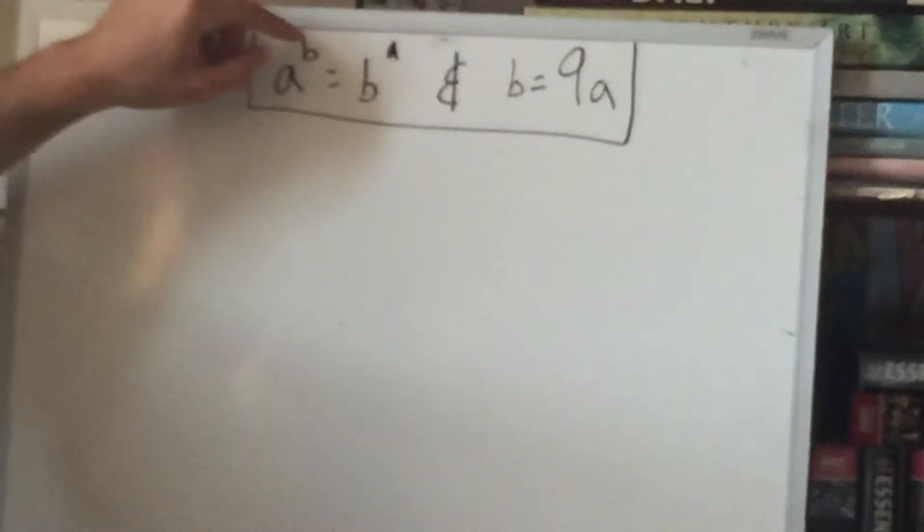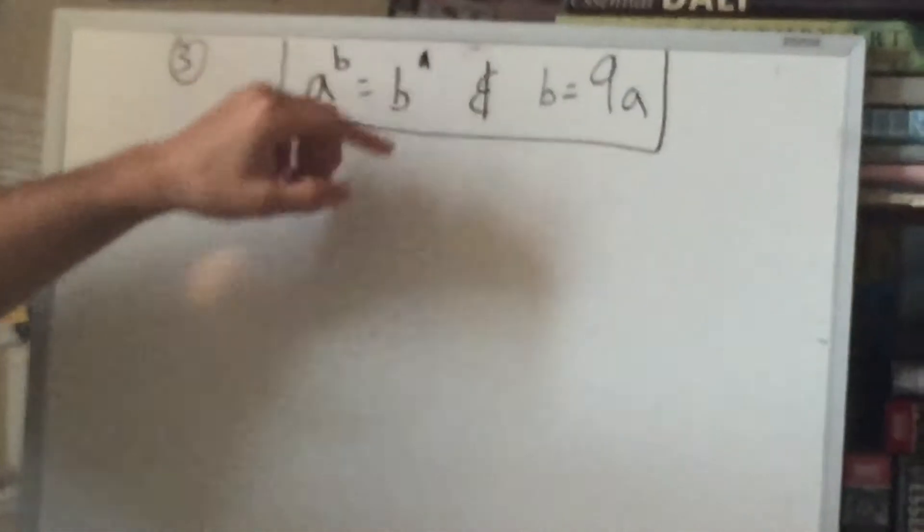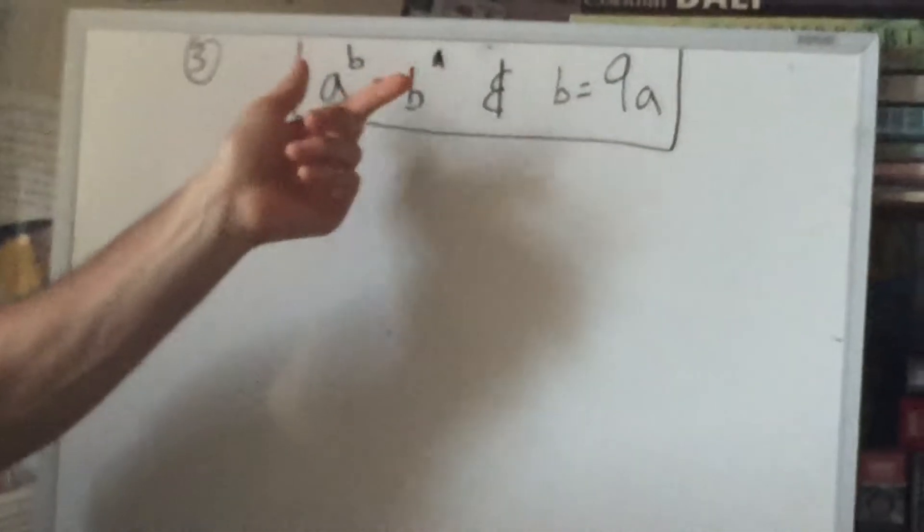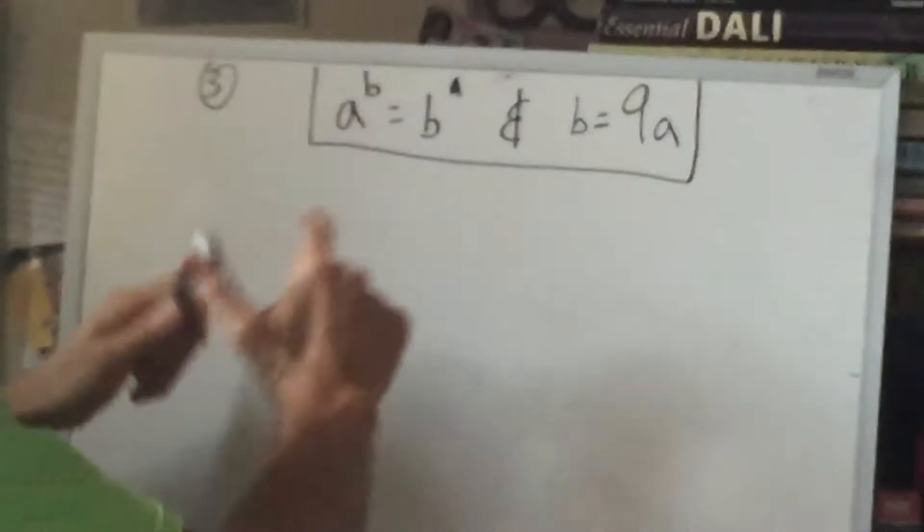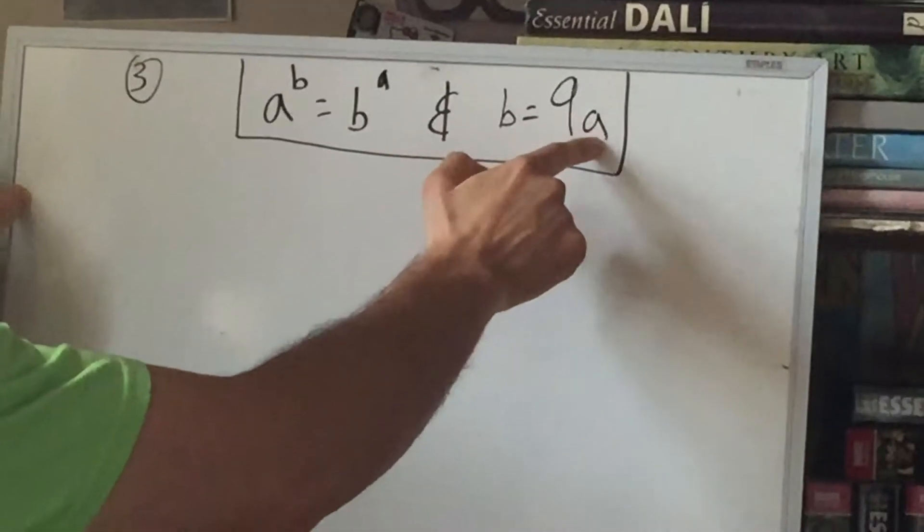So for example, 3 to the fifth is equal to 5 to the third. Now that's not a true statement, but we're looking for numbers such that that is. Now we're also given the fact that B is 9 times whatever A is.